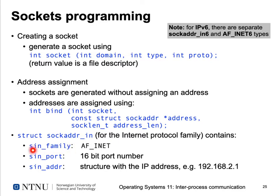The sockaddr_in structure contains a field indicating the address family — AF_INET for internet family protocols — a 16-bit port number, and a structure with the IP address, for example four bytes for an IPv4 address. For IPv6 there are separate sockaddr_in6 and AF_INET6 types, because the protocols differ between v4 and v6 and IPv6 addresses are much longer than IPv4 addresses.